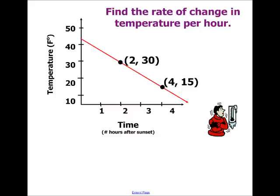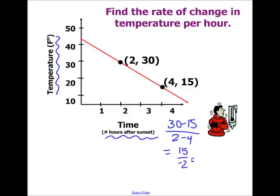Find the rate of change in temperature per hour. Now I'm graphing temperature along the y-axis and time along the x-axis. So as each hour goes on, my temperature is going down. So all I need to do, they gave me two points, is continue on with my delta y over delta x. And so I'm going to get 15 over negative 2, which means a decrease of 7.5 degrees per hour. Because it's going down 7.5 degrees for each hour.